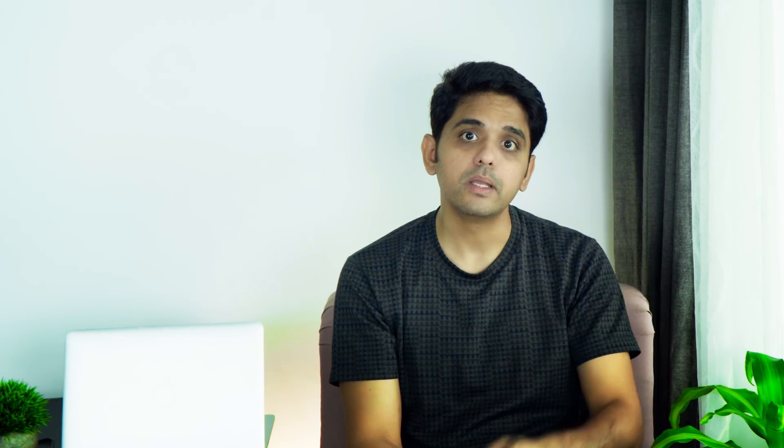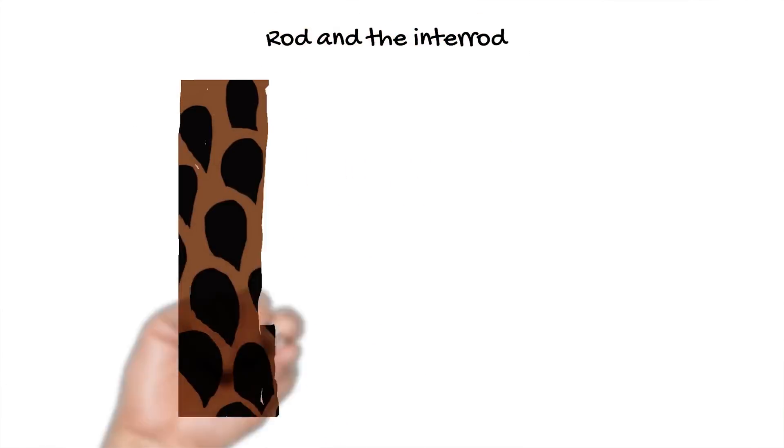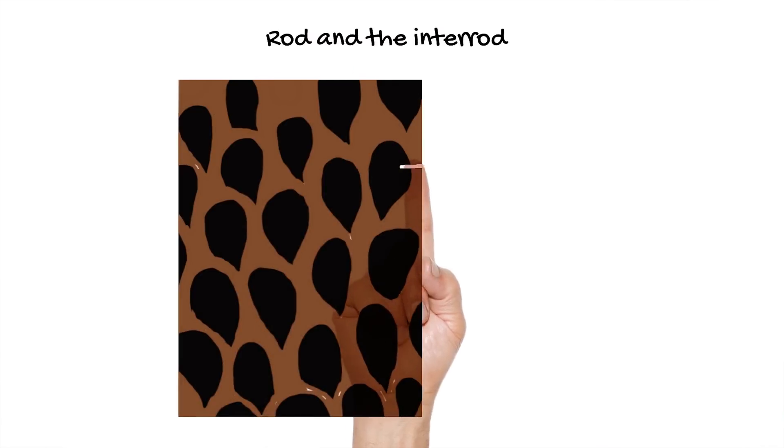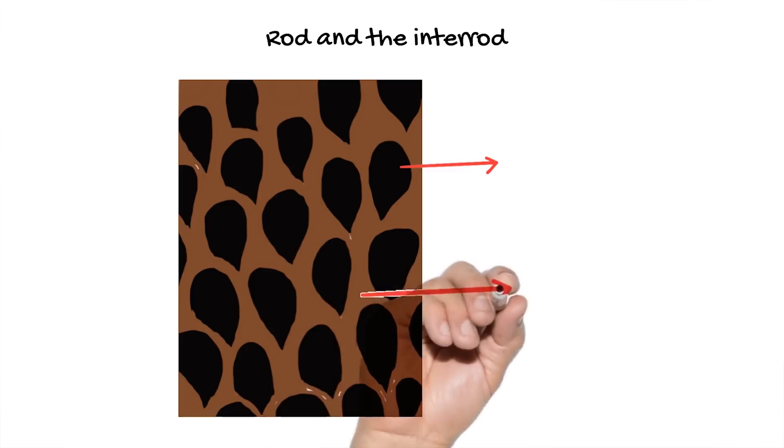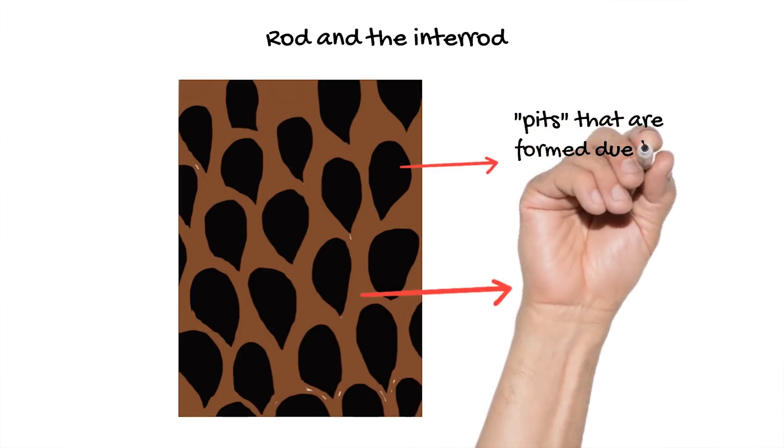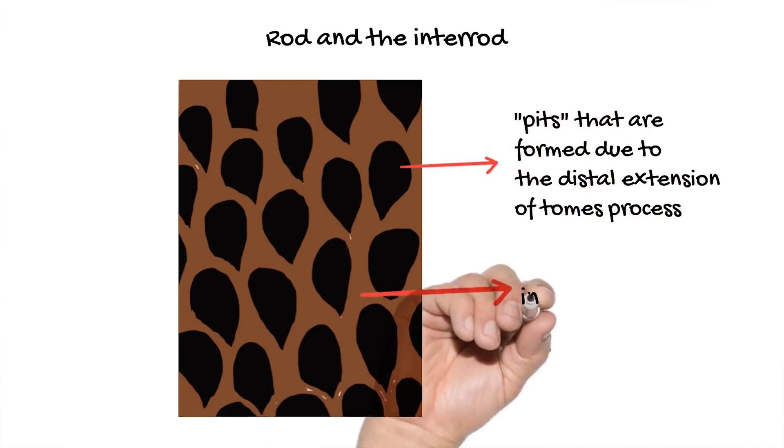Secondly, the distal extension of the Tomes' process, being at an angle to the main cell body, secretes the enamel matrix that fills the pit formed earlier. The material filling the pit forms your enamel rod and the material surrounding these rods is your interrod. The interrod forms first before the rod. This process of rod and interrod pattern continues until sufficient thickness of enamel forms.